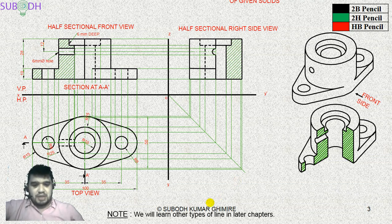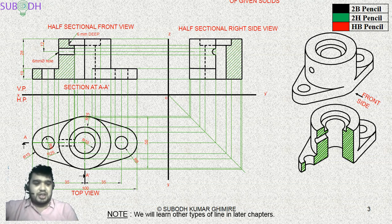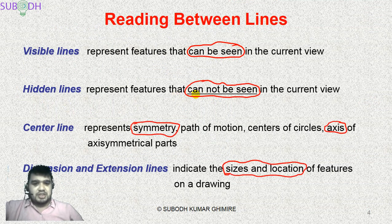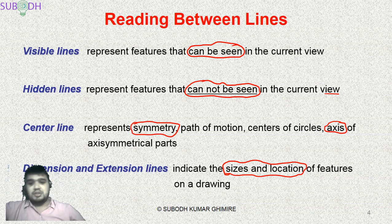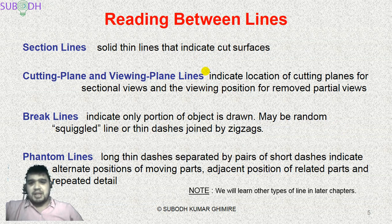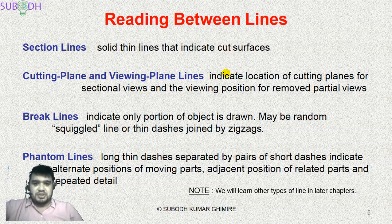We have all types of lines here — phantom line, break line — all these lines are used in practice. The visible line is used to represent features that can be seen. The hidden line represents features that cannot be seen in that view of the object. The center line represents symmetry and axis. The dimension or extension line indicates the object's size or location. The section line represents the cut area, and the cutting plane or viewing plane line indicates where the section is taken.